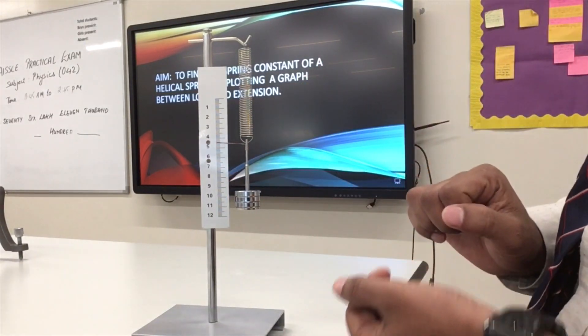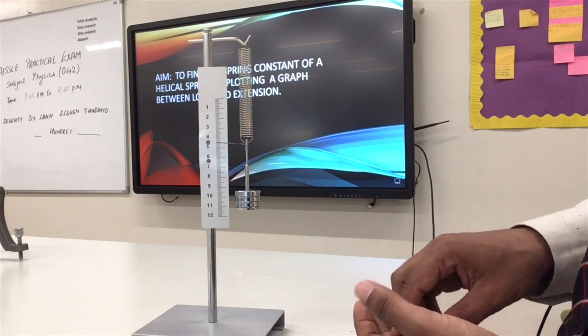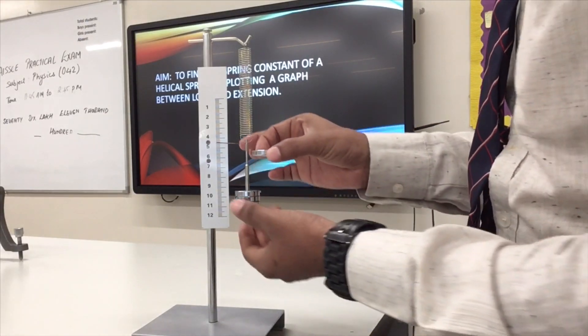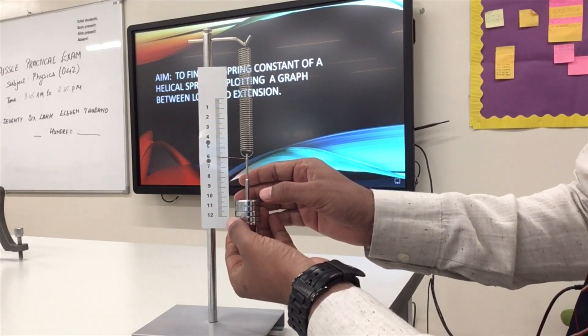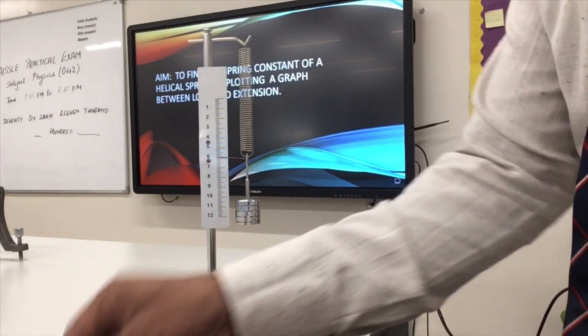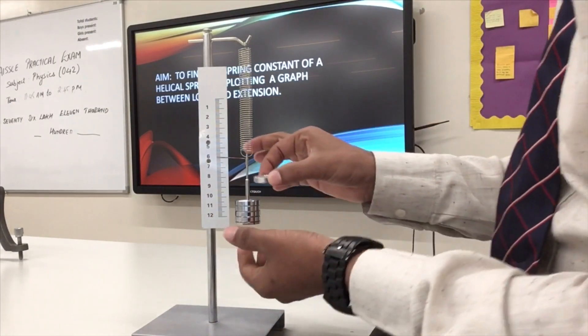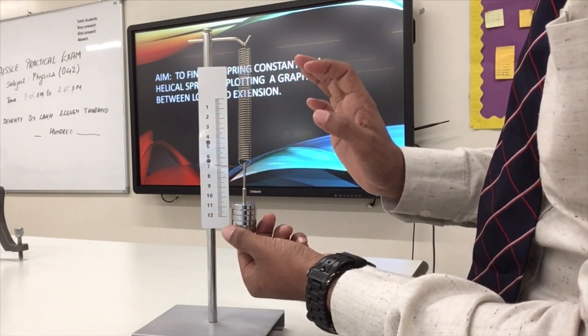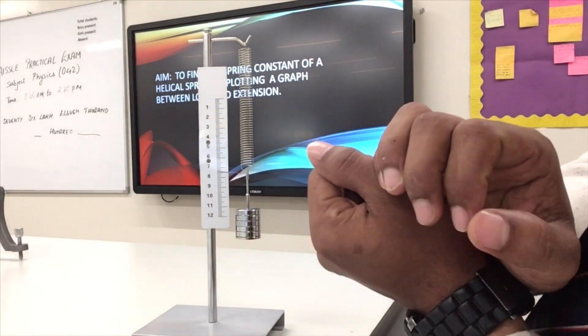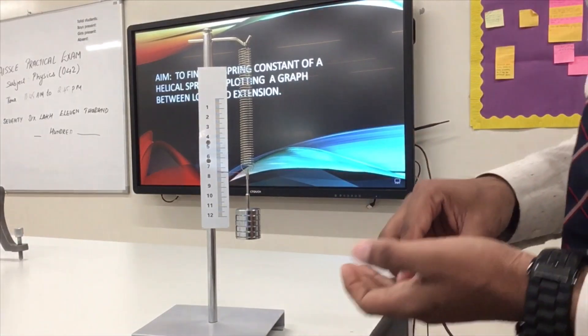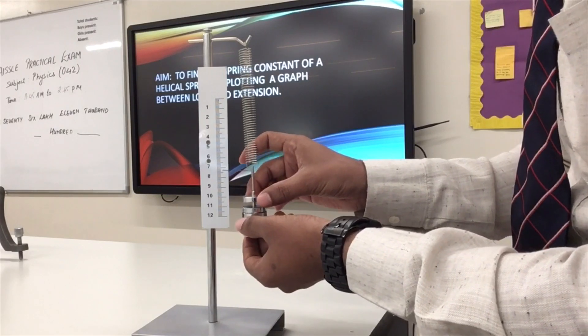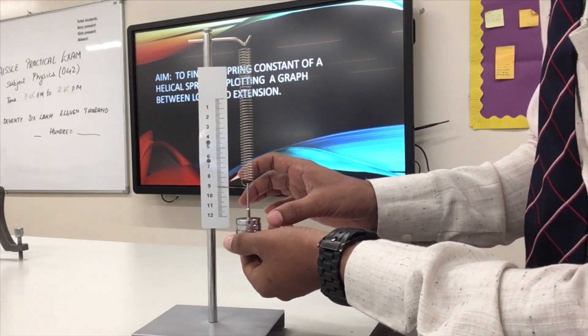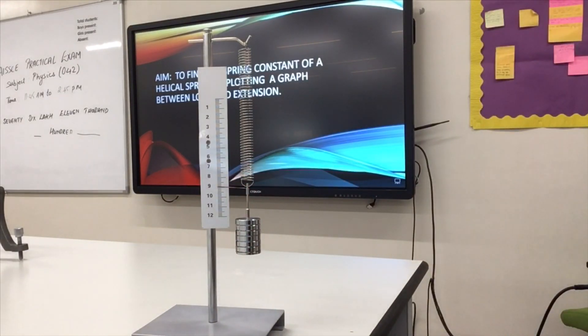The third 20 grams shows 4.5. The fourth 20 grams shows, let's see it properly, 6 centimeter. I'm adding two more. The fifth one shows, let's see the reading properly, it is 7.5 centimeter. And the last one shows 9 centimeter.